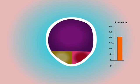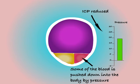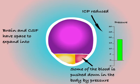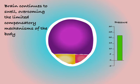The body can compensate for this to an extent. As pressure increases, some of the blood inside the skull will get pushed down into the body. This will create some space for the brain to swell into and help to reduce pressure slightly. However, if the brain continues to swell then the pressure will soon begin to rise again.